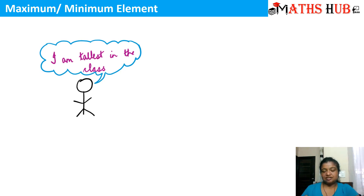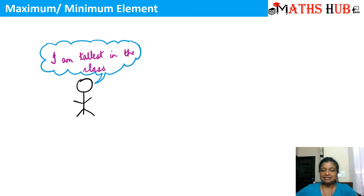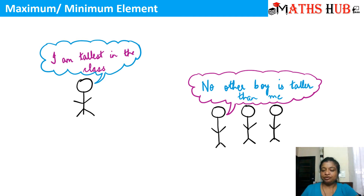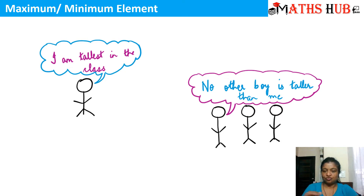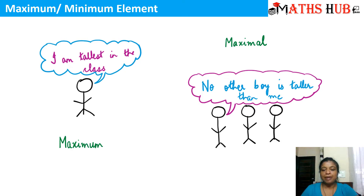Let us say there are students in the class and I pick only one tallest student. Suppose from a class strength of 60 students there is only one student who is the tallest — that student is picked and he says I am the tallest in the class. In the second case, I pick three students and all three have the same height, and these three students tell each other that no other student is taller than me. Both seem similar, but there is a minute difference. In the first case there is only one student who is tallest — this is referred to as the maximum case. The second case, where there are three students who are the tallest but no single one is taller than all others, is referred to as the maximal case.